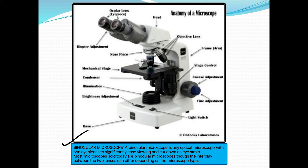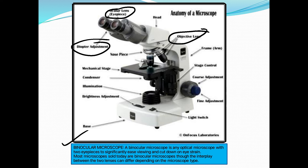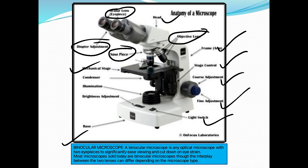The binocular microscope is an optical microscope with two eyepieces to ease viewing and reduce eye strain. Most microscopes sold today are binocular. Its parts include: eyepiece or ocular lens, diopter adjustment, head, nose piece, mechanical stage, frame, stage control, coarse adjustment, fine adjustment, light switch, brightness adjustment, illumination, condenser, and base.